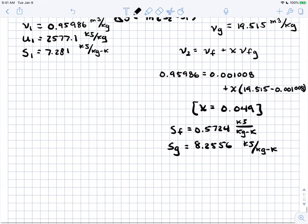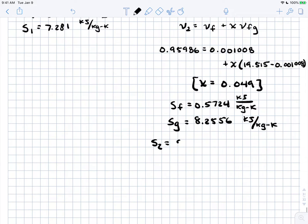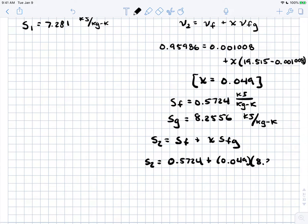With this information, I'll close the tables and solve for entropy at state 2. Using our formula, S2 equals 0.5724 plus x, which we just solved for, times S_FG. Let me calculate that. I get S2 to be 0.9489 kJ/kg·K.